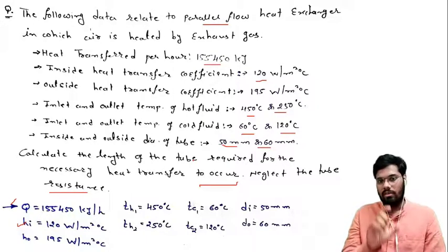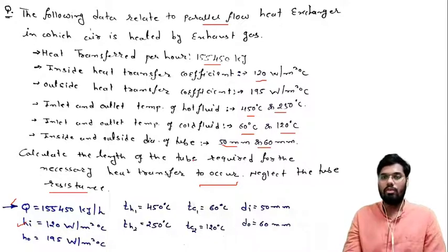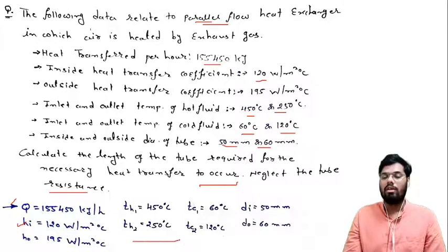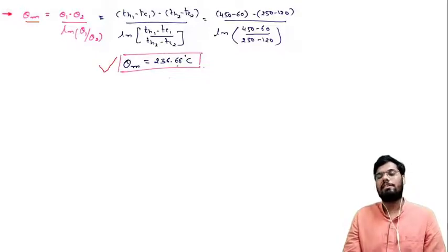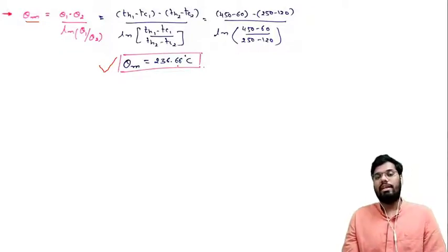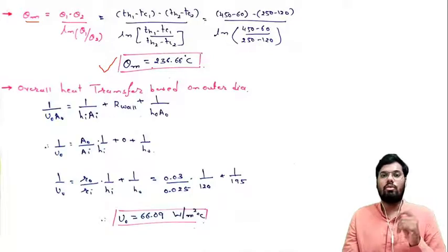Since the tube resistance is neglected, the conductive resistance becomes zero. To find the required length, we first need the heat exchanger area, which requires the LMTD θm. For a parallel flow configuration: θ1 = TH1 − TC1 and θ2 = TH2 − TC2. We know all four temperatures, so we can calculate θm using the LMTD formula. Substituting all values of TH1, TC1, TH2, and TC2, we get θm = 236.66°C.